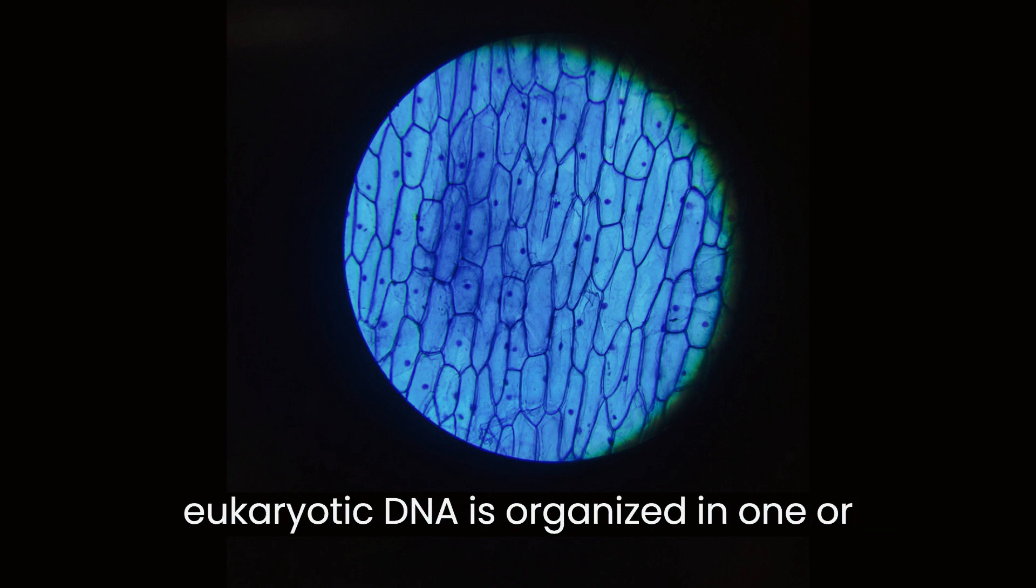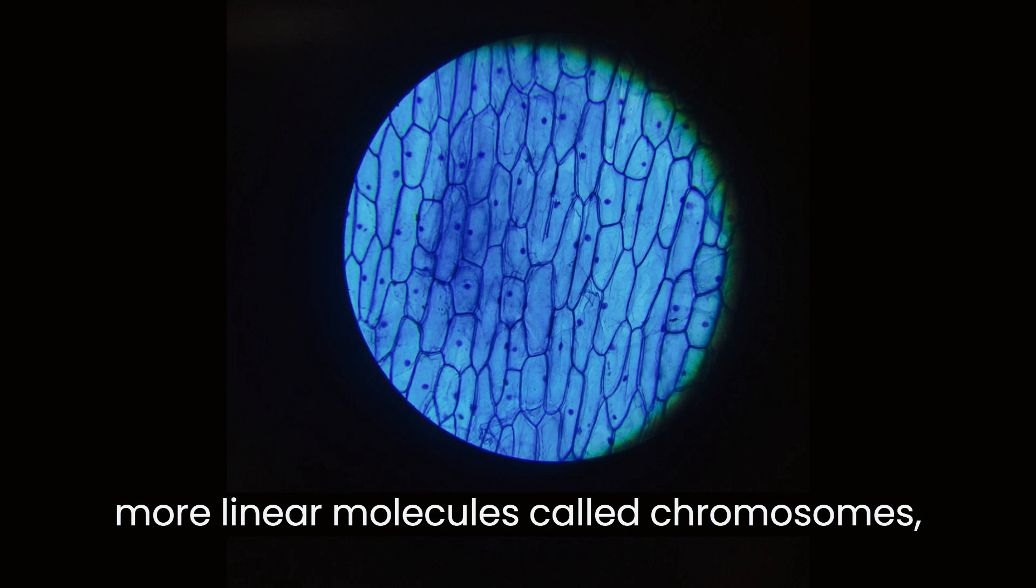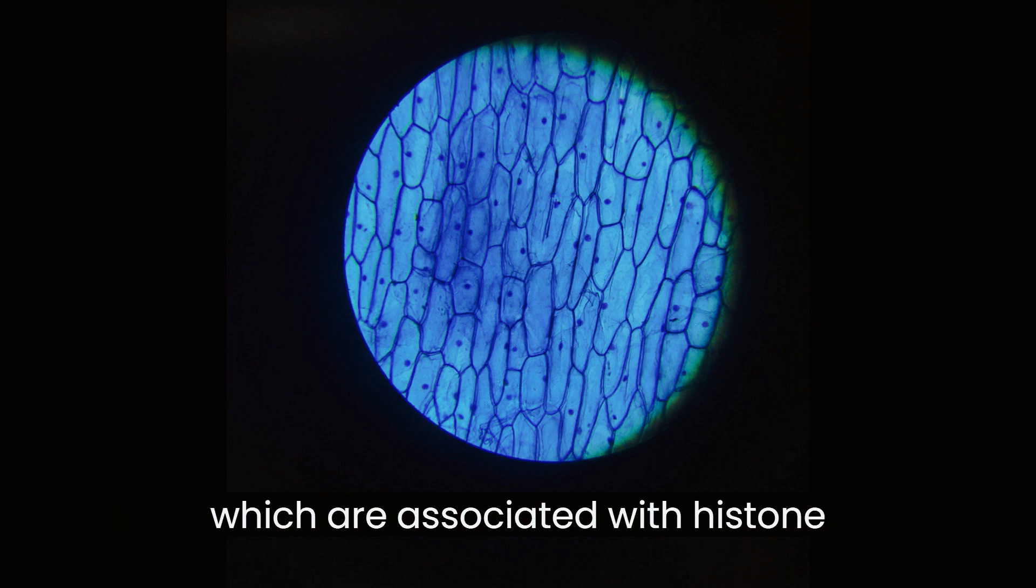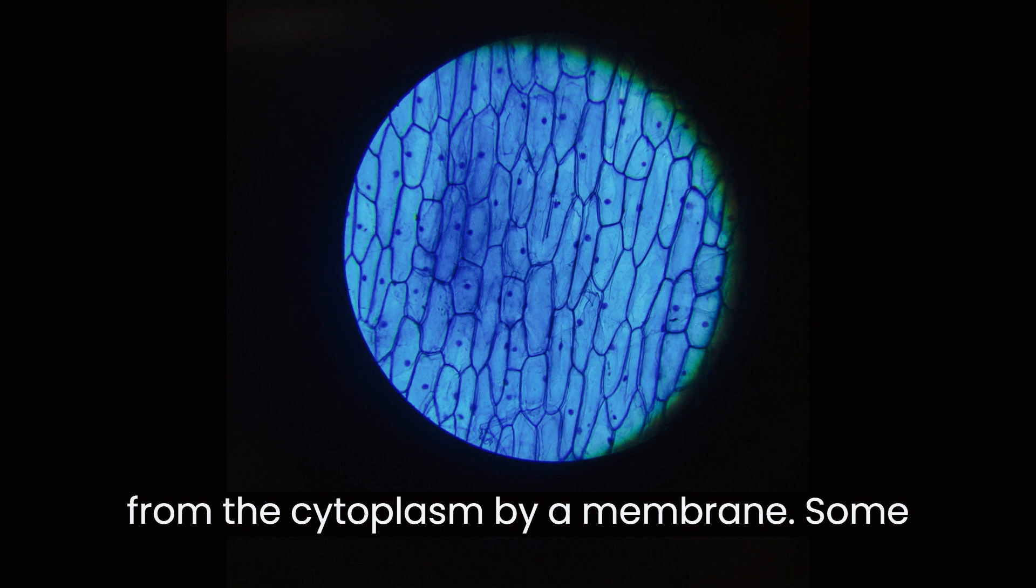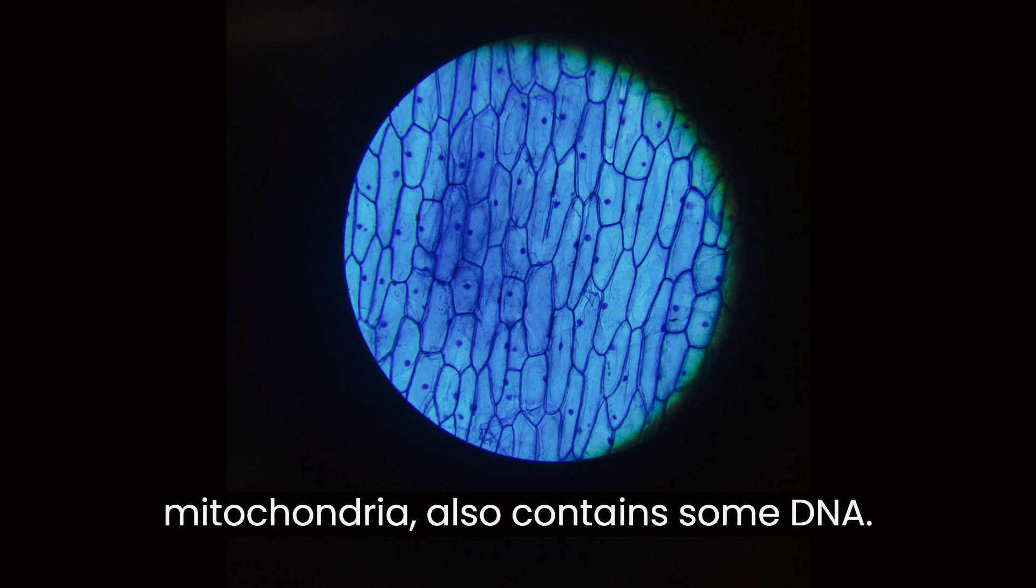The eukaryotic DNA is organized in one or more linear molecules called chromosomes, which are associated with histone proteins. All chromosomal DNA is stored in the cell nucleus, separated from the cytoplasm by a membrane. Some eukaryotic organelles such as mitochondria also contain some DNA.